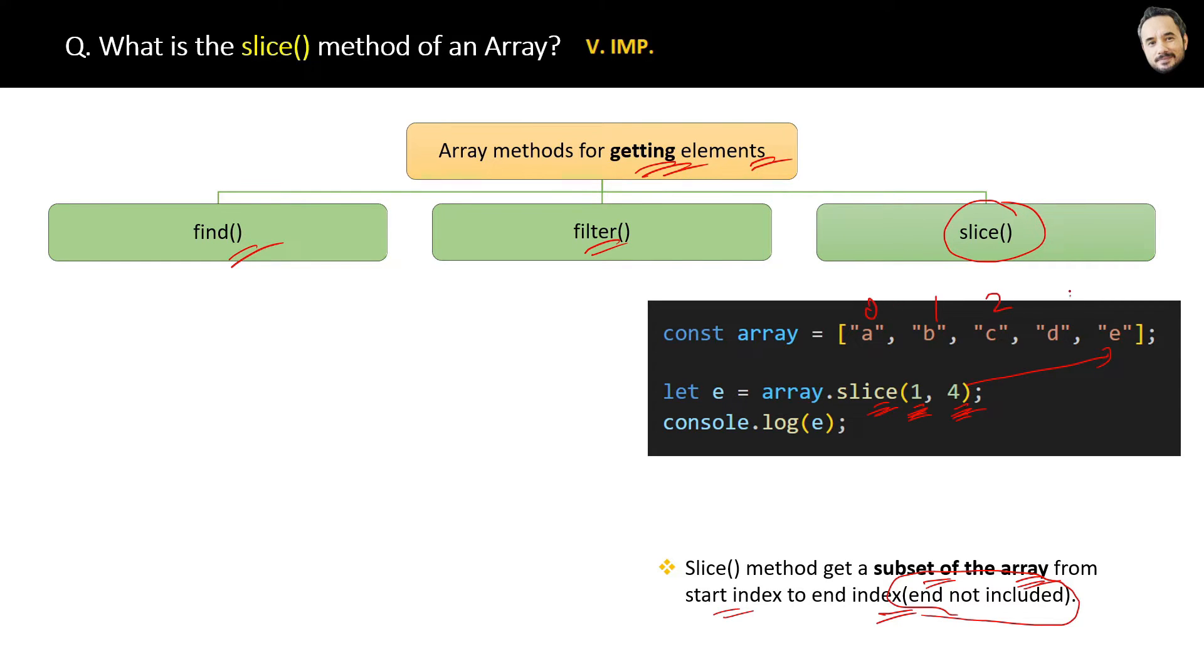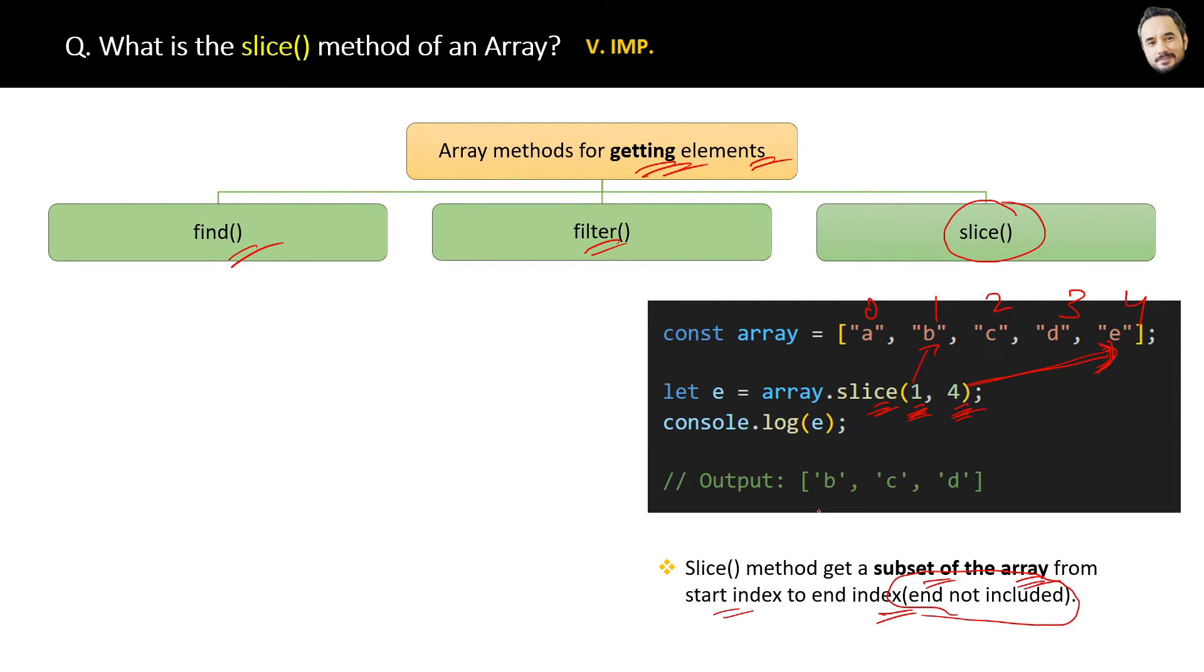So in this case, one is the start index with element b, and four is the end index with the element e. So the result is b, c, d. Again, the last element e will not be included by the slice method. That's all about the slice method, and it is very frequently used in JavaScript.